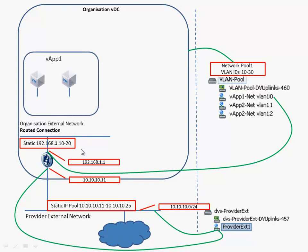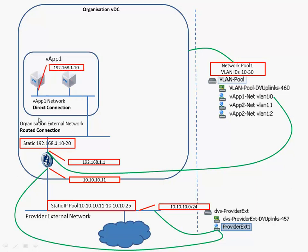When we are deploying a vApp that contains several virtual machines with a direct connection, the vApp is connected directly to the organization external network — we don't need to deploy a vShield Edge device. vShield Edge devices are only deployed when we do routing or firewalling, so with fencing or nothing on the vApp a vShield Edge device is deployed. With a direct connection we don't need one, because this vApp is connected to the organization external network and will get its IP addresses from it — starting with .10, then .11.